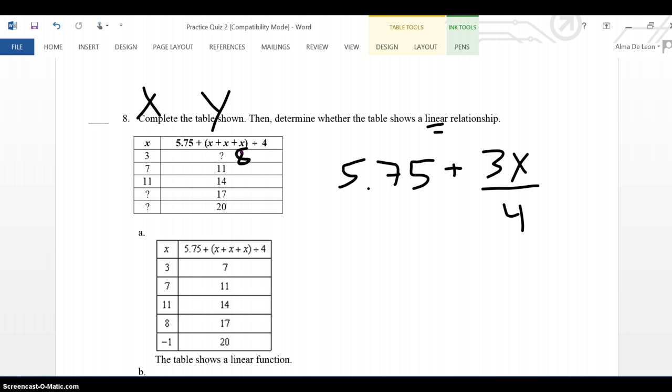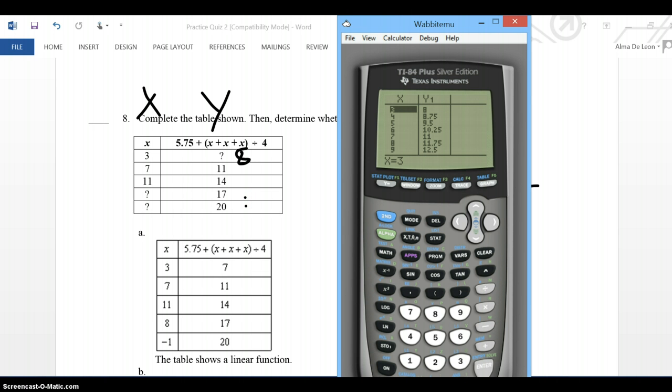Now I'm trying to find the missing values. What is x when y is 17 and what is x when y is 20. So I'm going to look at my table for that. I'm trying to see what is x when y is 17. And if I scroll all the way down,